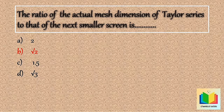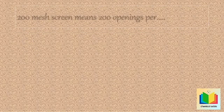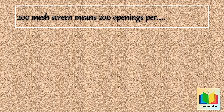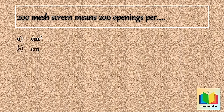Next question: 200 mesh screen means 200 openings per — Option A: Centimeter square. Option B: Centimeter. Option C: Inch. Option D: Inch square.